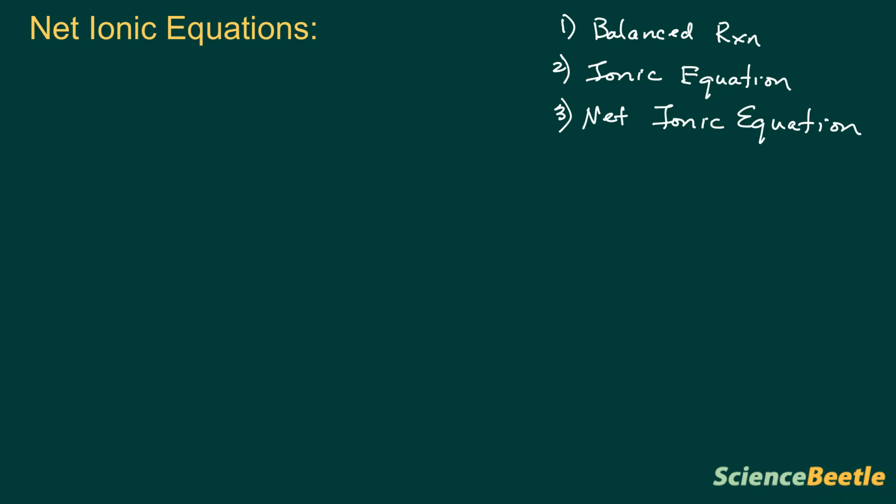Let's go ahead and give an example so that we can start solving some of these problems. I'll begin with something that's pretty easy that was identified in our homework. Here is the reaction: we're taking lithium hydroxide — notice it's in the aqueous — and it's going to be combined with iron nitrate.